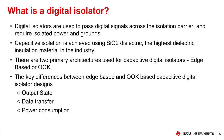Regarding data transfer: edge-based solutions transmit the data stream across the isolation barrier following an input pulse of specified length, using the edges of the input stream to construct the output stream. OOK-based solutions transmit the data stream across the barrier through a high-frequency carrier, enabling improved noise and CMTI performance. Regarding power consumption: edge-based architecture offers lower power and lower data rates, while OOK offers higher power with higher data rates.